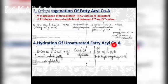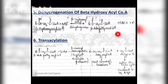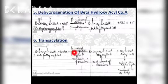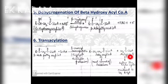Step four is hydration of the unsaturated fatty acyl coenzyme A in the presence of enoyl coenzyme A hydratase, producing beta-3-hydroxy acyl coenzyme A. Step five is dehydrogenation of beta-hydroxy acyl coenzyme A in the presence of a dehydrogenase enzyme, producing beta-keto fatty acyl coenzyme A. Step six is thiolysis, also called thiolytic cleavage, which occurs in the presence of beta-oxoacyl transferase or beta-keto acyl transferase. Here, the fatty acyl coenzyme A proceeds to the next round of oxidation and acetyl coenzyme A enters the Krebs cycle to produce CO2 and water.